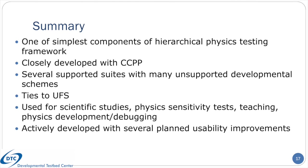To summarize, the CCPP single-column model is one component of a UFS-based hierarchical physics testing framework whose components share the CCPP as a means to interface with physics. It's developed in concert with the CCPP and publicly released alongside it. It can be used with a number of supported suites including the operational GFS physics, as well as non-supported physics schemes in the development branch. It is distinct from the FV3 dynamical core yet shares critical similarities to maintain physics compatibility. It has been used in a wide range of applications and is well-suited to investigative studies of physics suite behavior, with a number of expected usability and functional improvements actively in development.